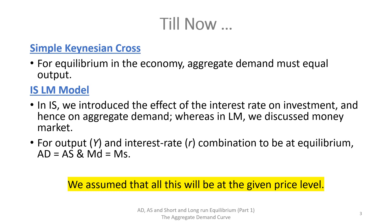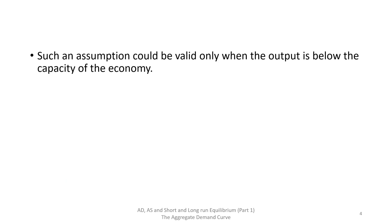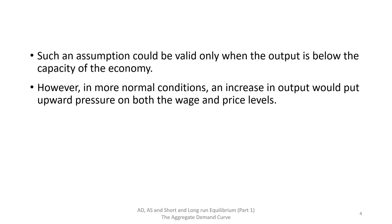However, such an assumption could be valid only when the output is reduced below the capacity of the economy. In these conditions, for example during the Great Depression, an increase in output might not put upward pressure on the level of money wages given the high level of unemployment. Therefore, the cost of production will not increase with an increase in output.